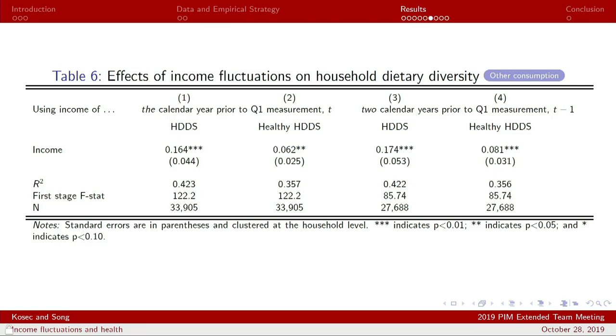We see that reduction in income tends to reduce healthy dietary diversity and overall dietary diversity. In the interest of time I won't show the full consumption results, but we're seeing more consumption of vegetables, fruits, and some seafood in times when income is a little bit higher.